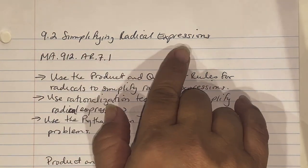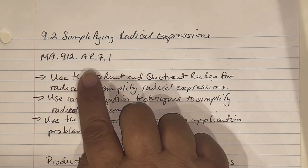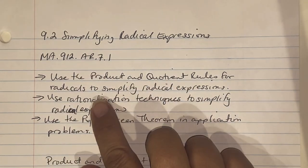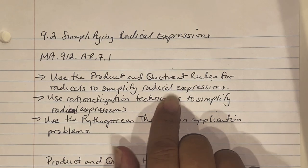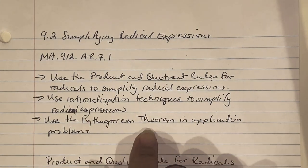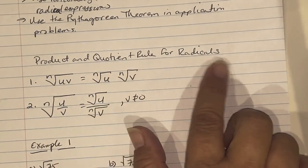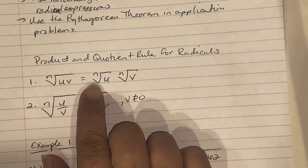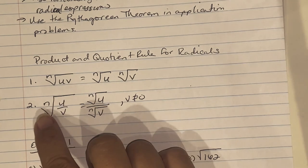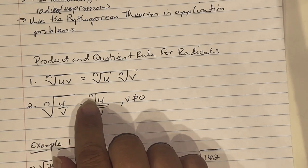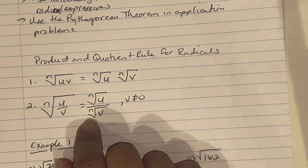9.2 Simplifying Radical Expressions — MA 912 AR 7.1. We're going to use the product and quotient rules for radicals to simplify radical expressions, use rationalization techniques, and apply the Pythagorean theorem in application problems. The product and quotient rule says: the nth root of UV can be rewritten as the nth root of U times the nth root of V, and the nth root of U/V equals the nth root of U over the nth root of V, where V does not equal zero.